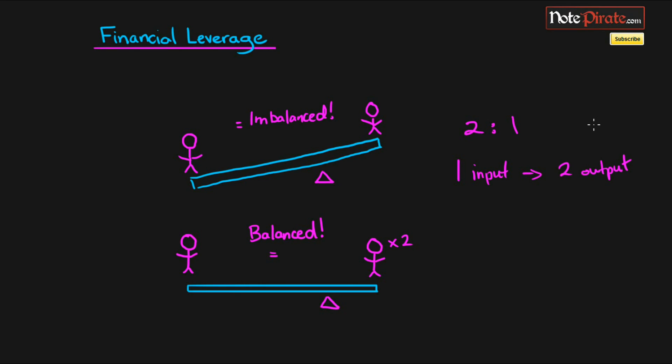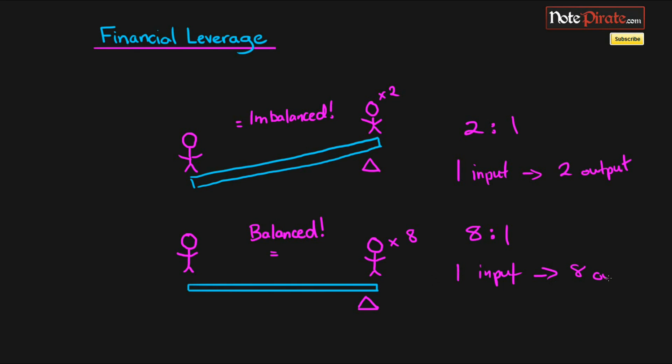We can take this further and say, what if we move the fulcrum even further to the right? Well, there's going to be an imbalance again. Two people is not going to be sufficient, so we're going to need maybe eight people. Now it's an 8 to 1 ratio by increasing our leverage.